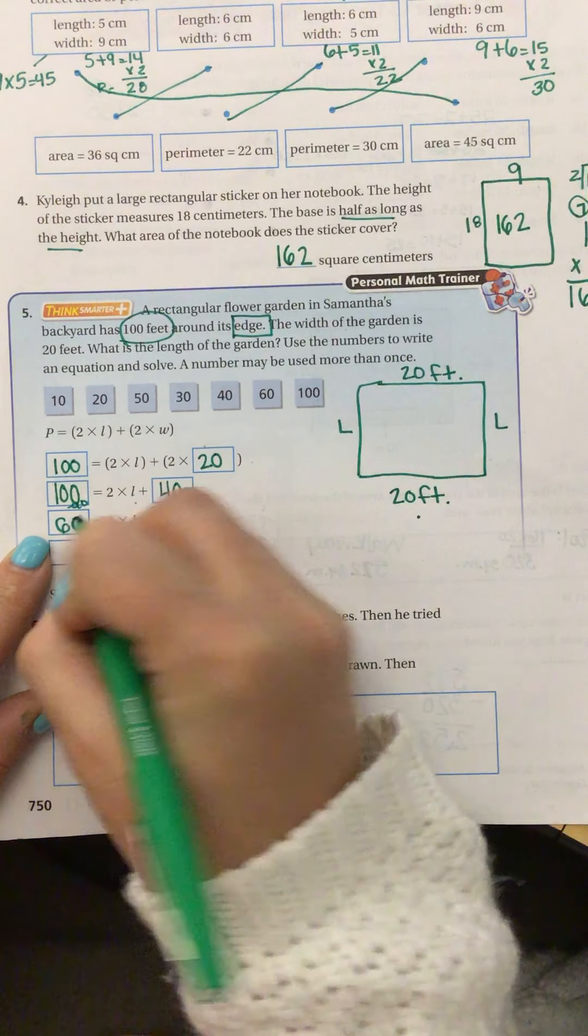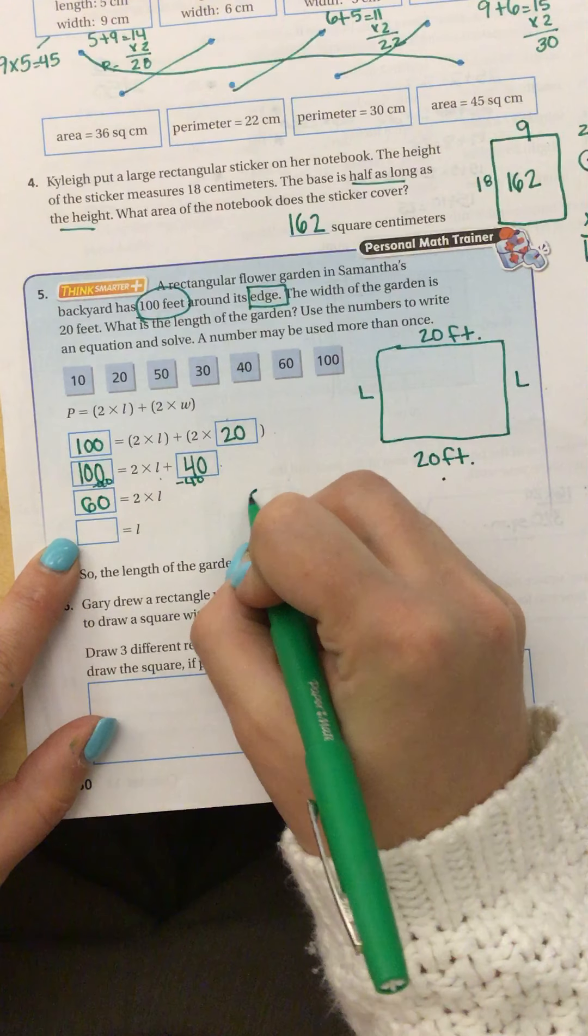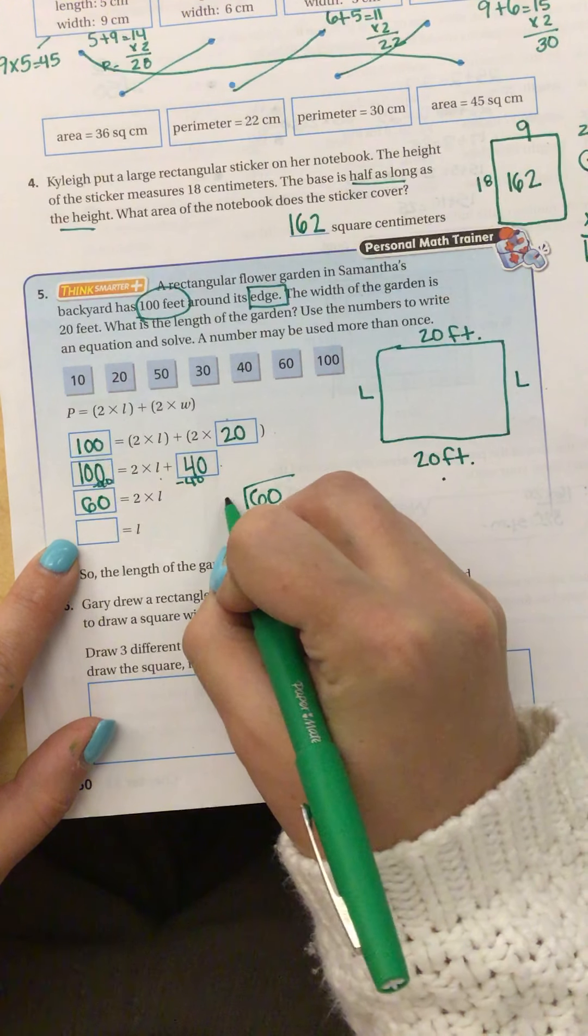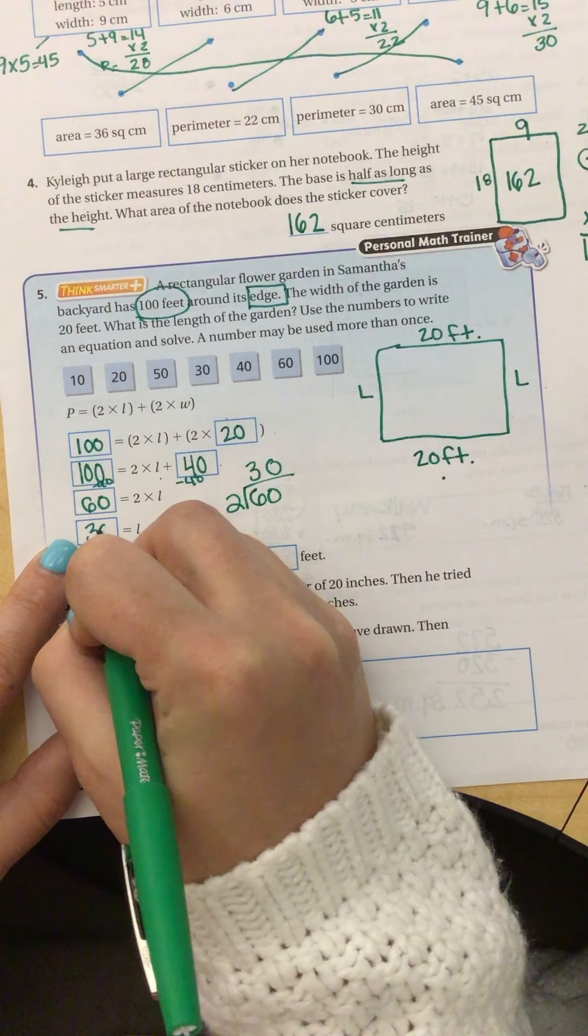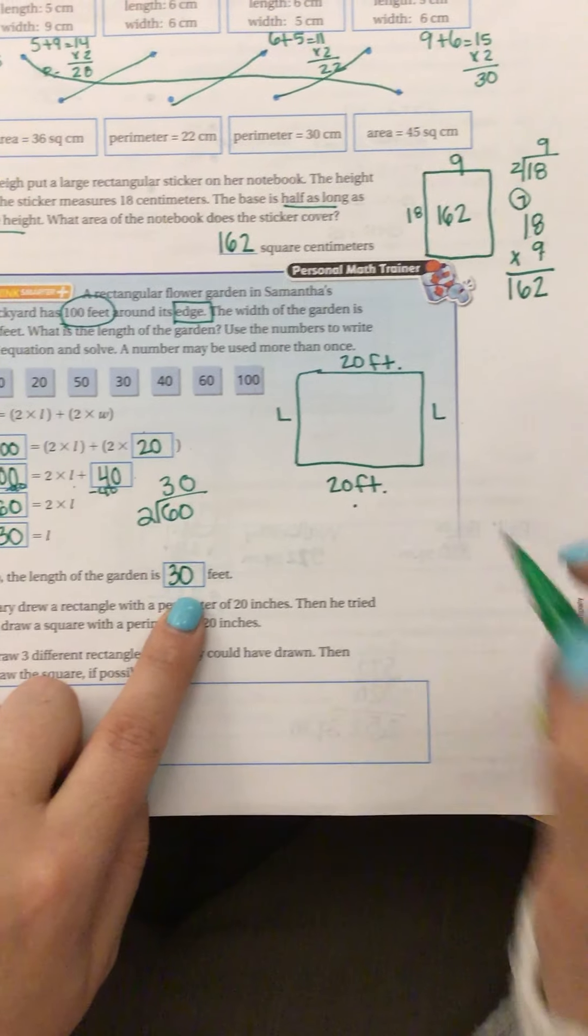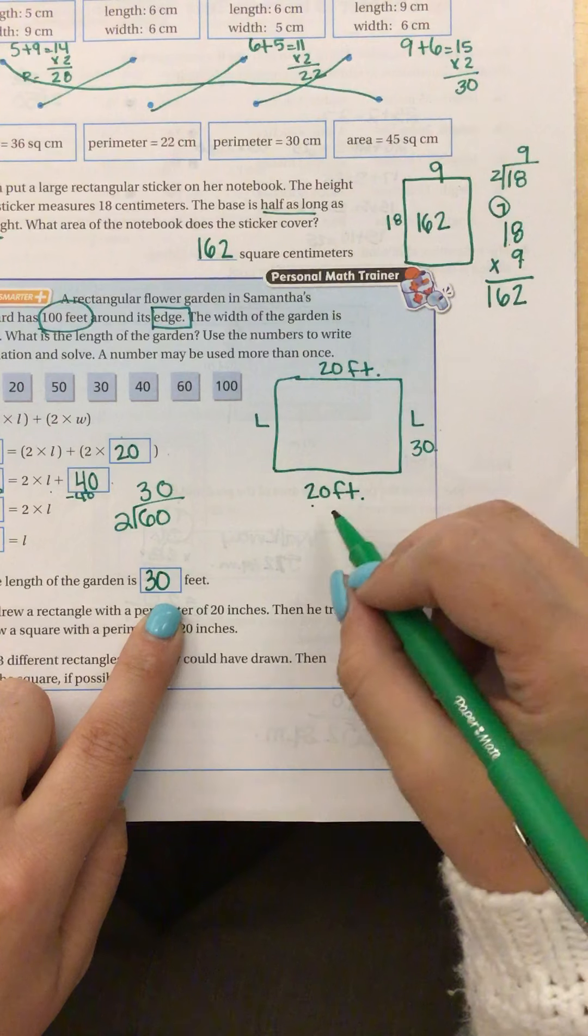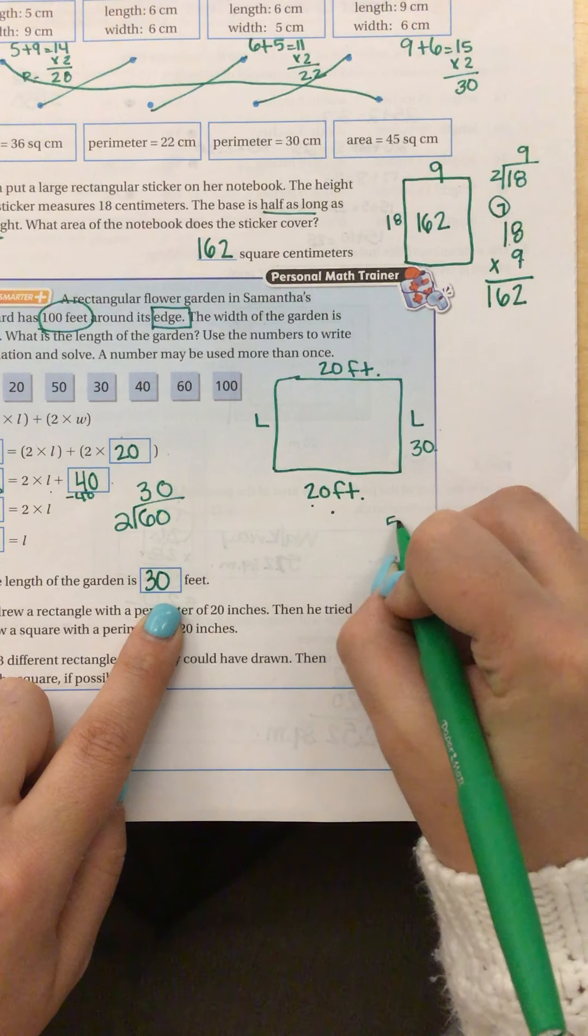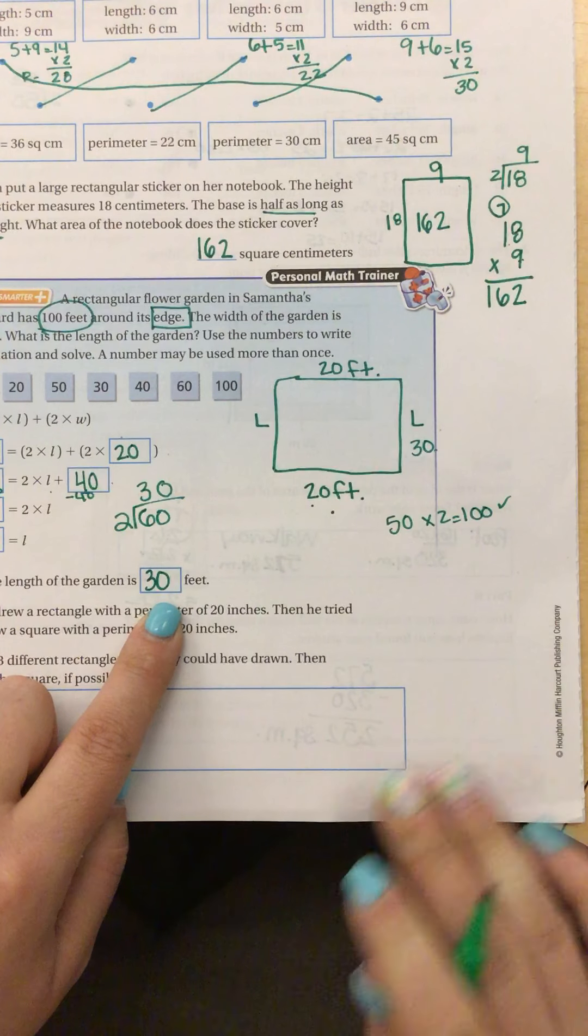And that gives me 60 equals 2 times the length. So to find that, I'm going to do 60 divided by 2, which is 30. So my length of this rectangle is 30. Now I can double check this by doing, if this is 30, 30 plus 20 is 50, and 50 times 2 equals 100. So yes, it does work.